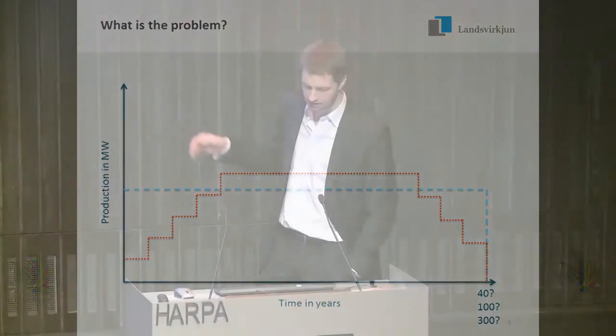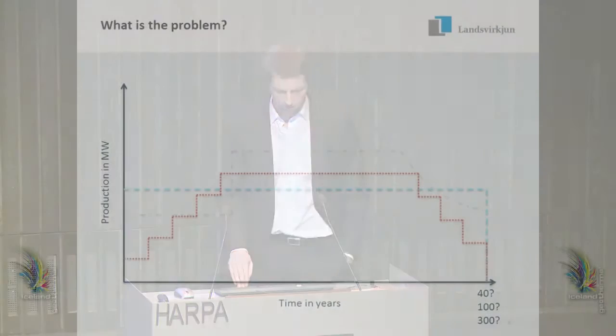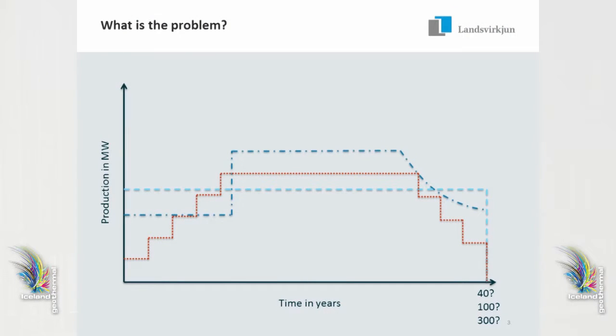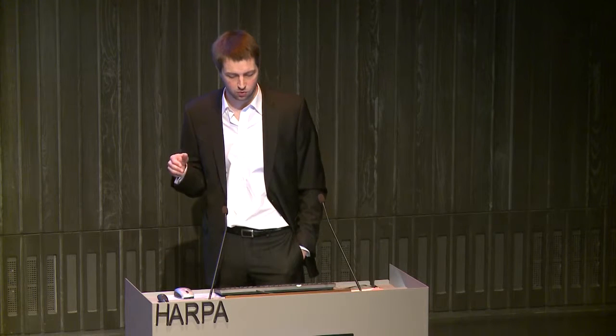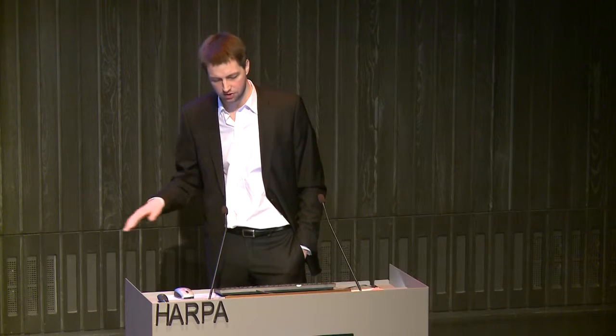Then maybe we ramp down again in a few phases as we realize that the resource is starting to drain and it's not economical to maintain full production capacity anymore. Another option would be to build up in two phases with a long production period in between, and then end production by not drilling any more makeup wells — just let the production capacity fade down as the wells decline in their capacity.